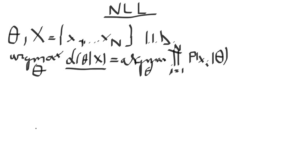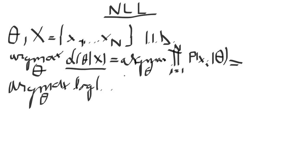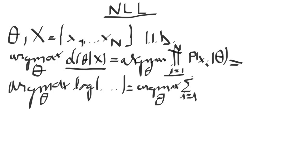Now we use the fact that finding the argmax of a function is equivalent to finding the argmax of the logarithm of that function. We can write our equation as the argmax over theta of the logarithm of that product. Using the property that the logarithm of a product is equivalent to summing all the logarithms of the terms, we rewrite as: argmax over theta of the sum from i equals 1 to n of the logarithm of p of xi given theta.